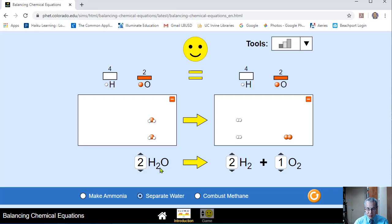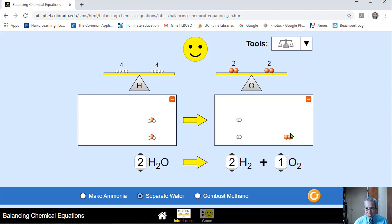Happy face says it's now in balance. Did it. Coefficients are two for the water, two for the hydrogen gas, one for the oxygen gas. Go back to this one. This is an alternative way of saying hydrogen is in balance. Oxygen is in balance. It's all good.